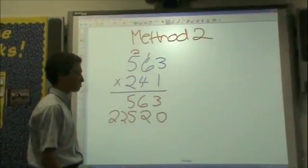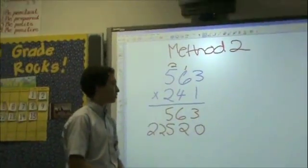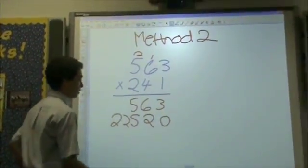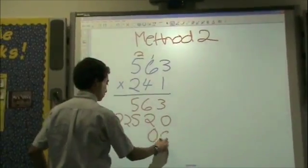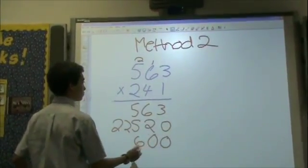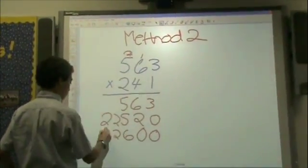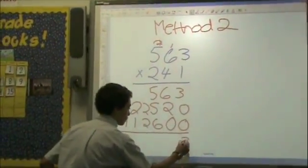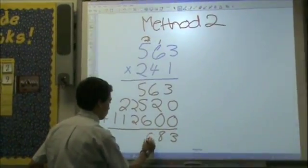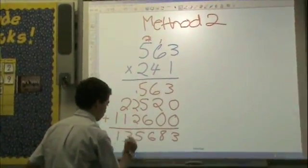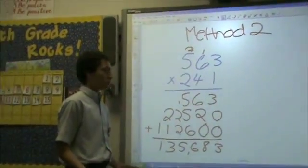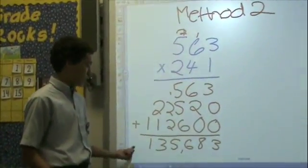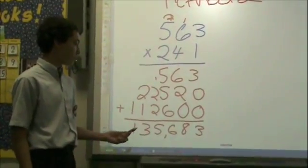You can either add the zero in or take it out, but I suggest using it so you know what place it's in. Then you do the 2 in the hundreds place times 563, then you just add it all together. The answer is the same as Method 1 — 135,683 — because you can use both ways to answer the same problem.